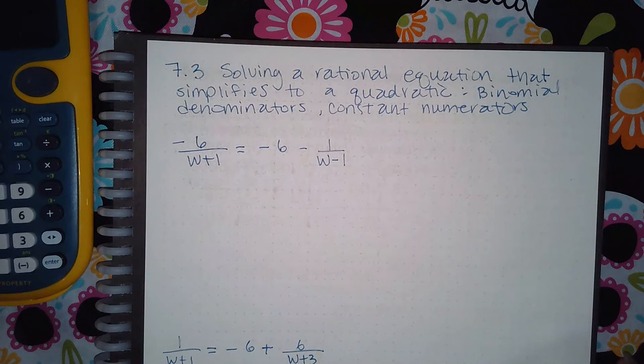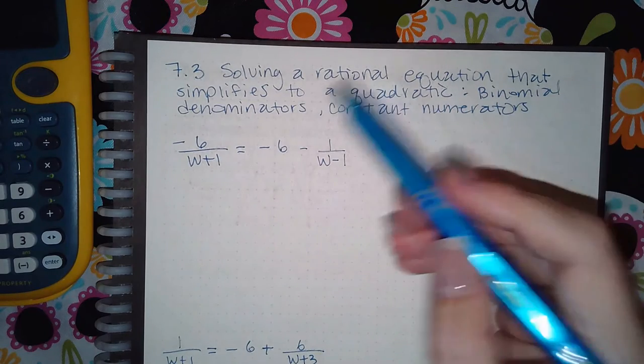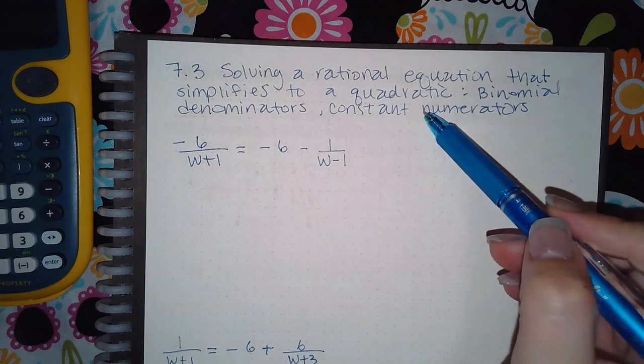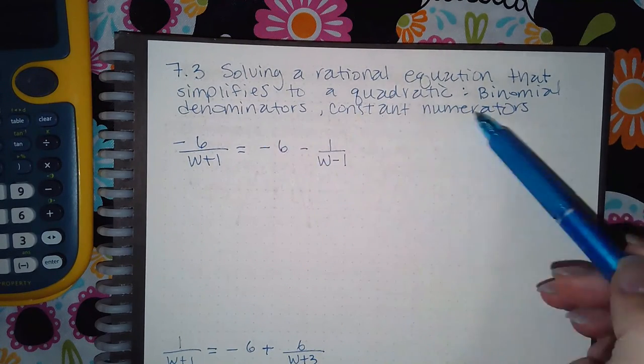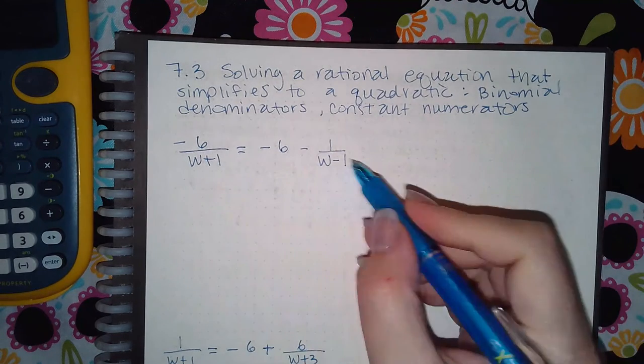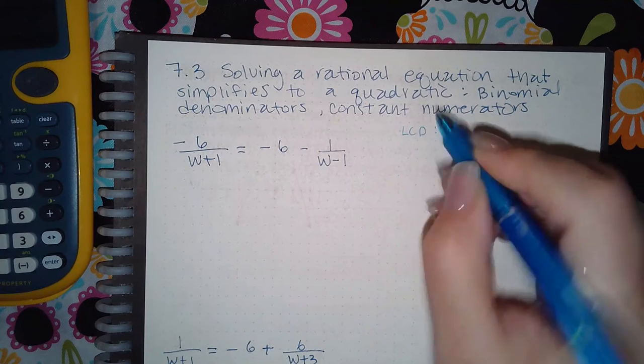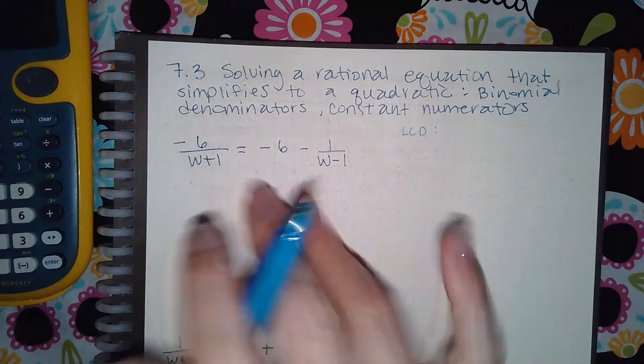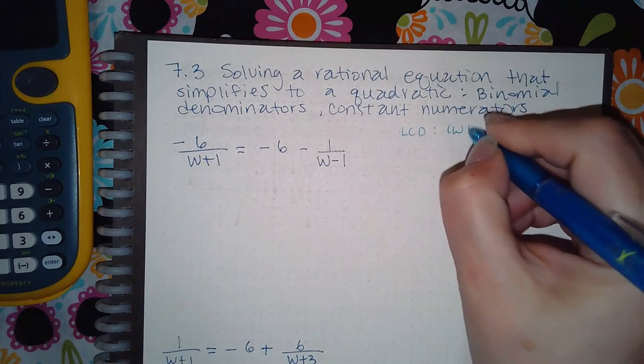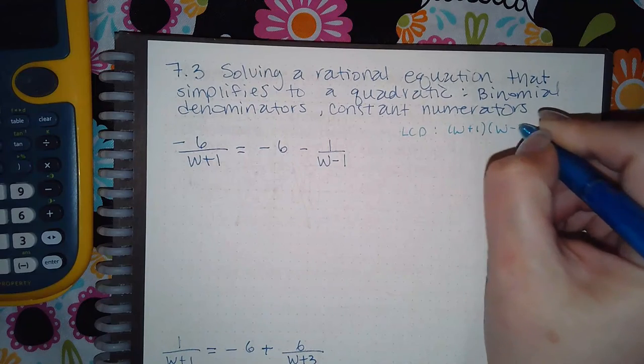Here we have solving a rational equation that simplifies to a quadratic with binomial denominators and constant numerators. We do have to identify the lowest common denominator here, and since both of these expressions are different from one another, we have to include both in our common denominator.